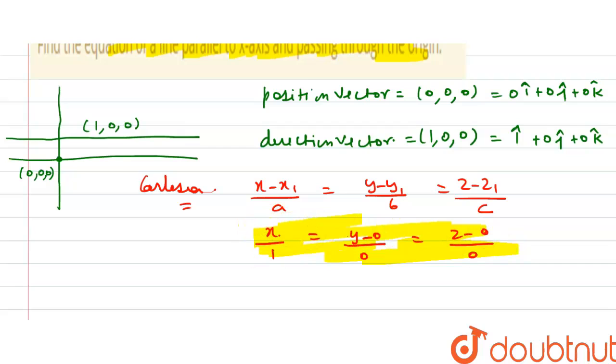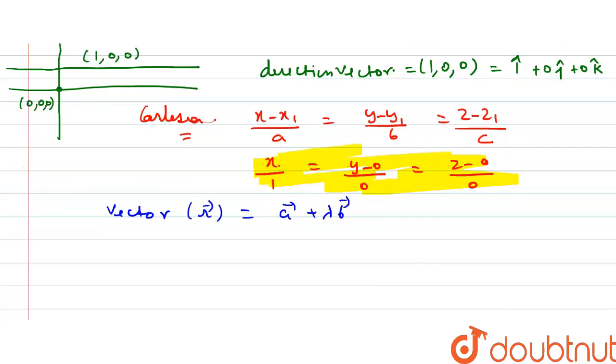And now we have to find the vector equation. Vector equation we write: r-vector equals a-vector plus lambda times b-vector, where a-vector is our position vector. Here the position vector is 0·i-cap plus 0·j-cap plus 0·k-cap plus lambda times b-vector that is i-cap plus 0·j-cap plus 0·k-cap.